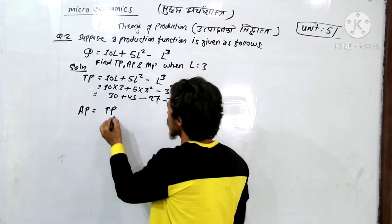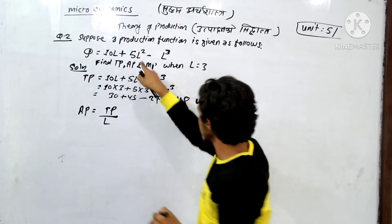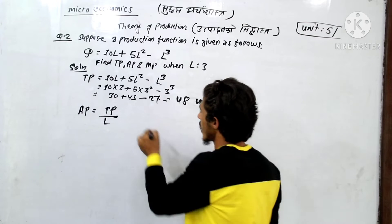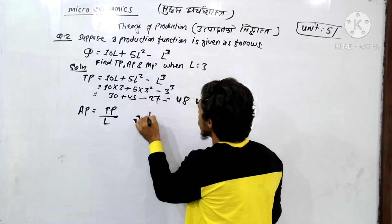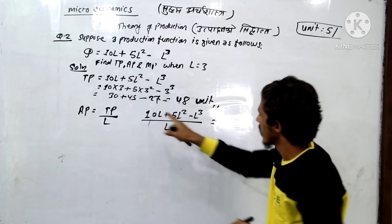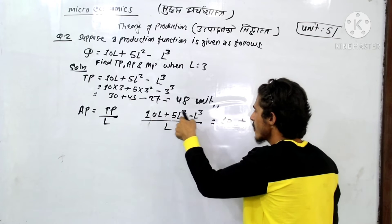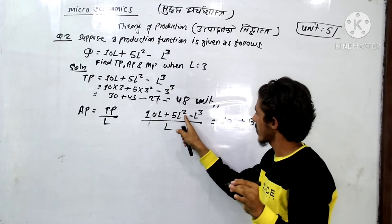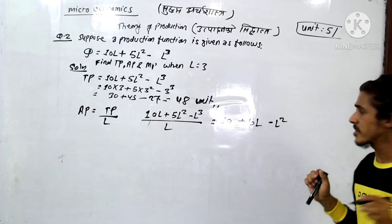AP equals TP divided by L. That is total quantity divided by L units. So AP is the TP function divided by L.